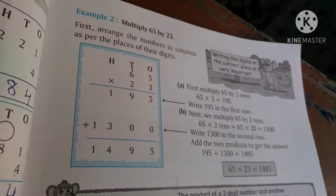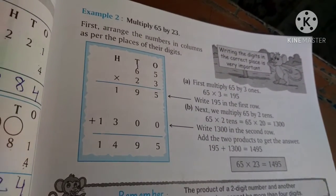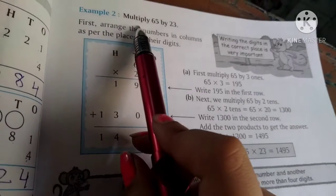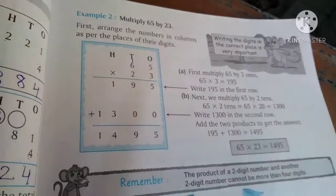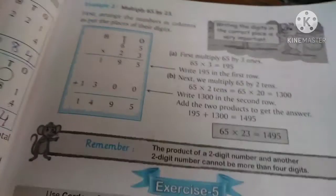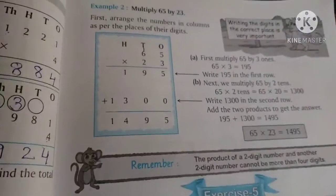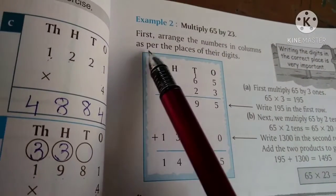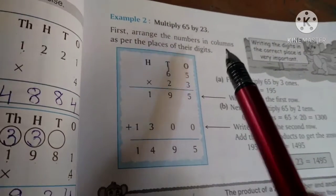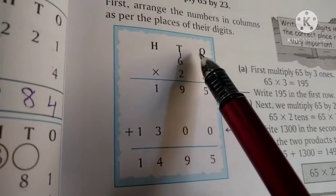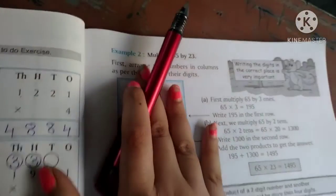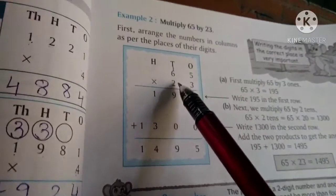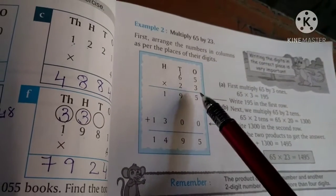This example is from textbook page number 61. Example number 2: Multiply 65 by 23. First, arrange the number in the column as per the place of their digit. We write 65 multiply by 23.